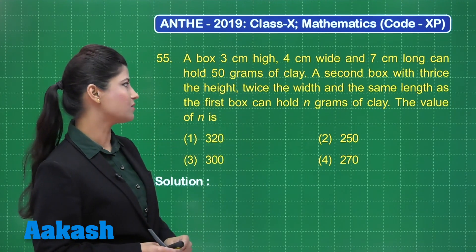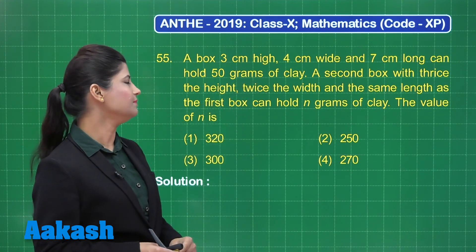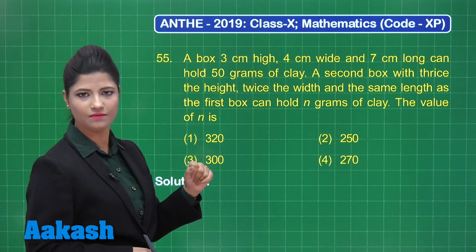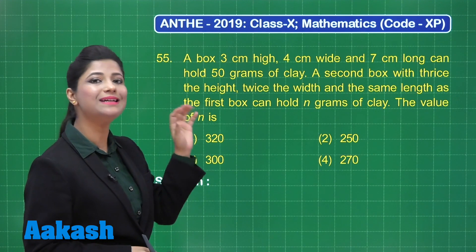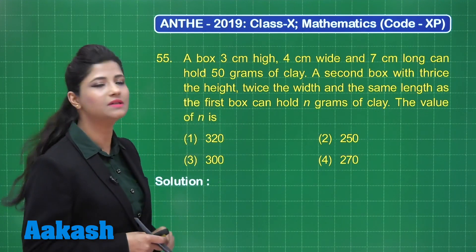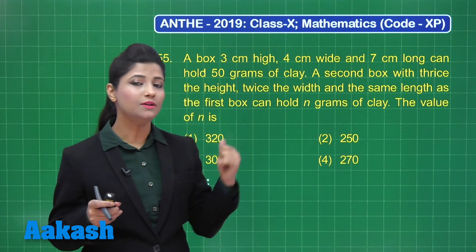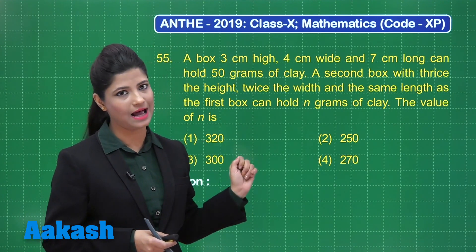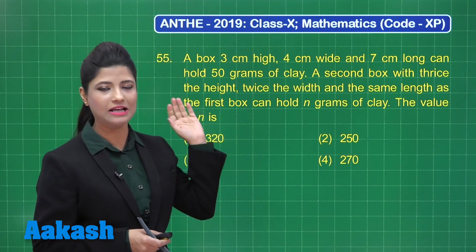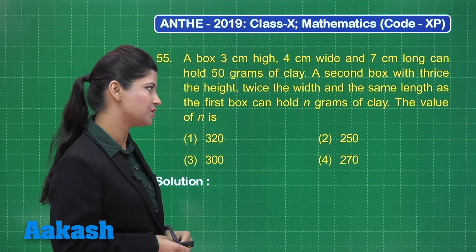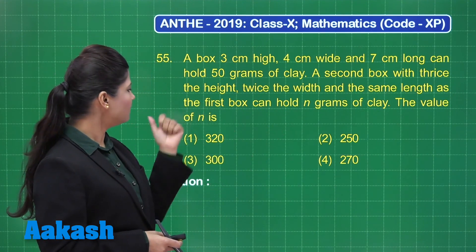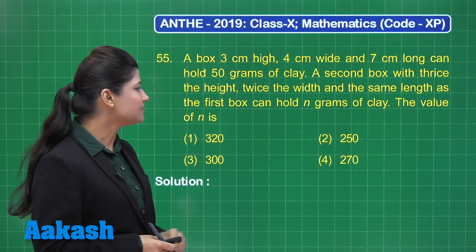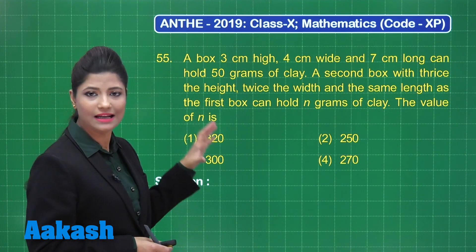The first box is cuboidal having length, breadth and height as 7, 4 and 3 respectively, and it can hold 50 grams of clay — a capacity of 50 grams. The second box has length, breadth and height as 7, 8 and 9 as per the values given in this question. The value of n is the capacity of the second box.